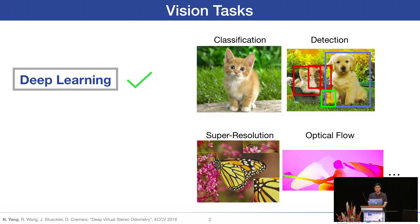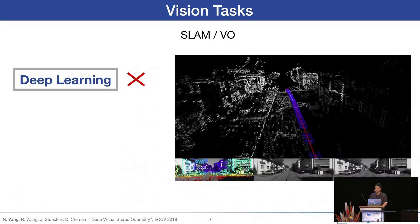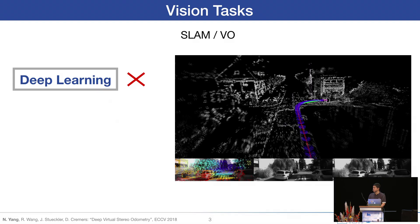As we all know, deep learning has swept a lot of areas, not only high-level perception like classification and object detection, but also low-level tasks like super-resolution and optical flow estimation. However, there is still one field where deep learning methods cannot compete with classical methods, which is SLAM, or visual odometry.